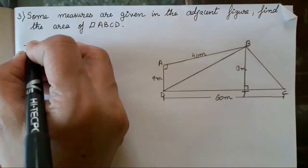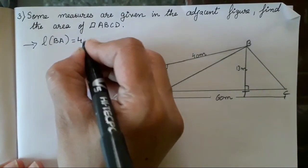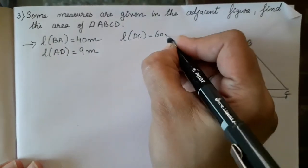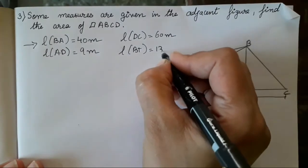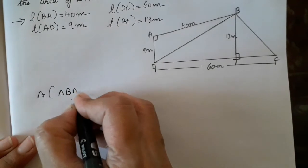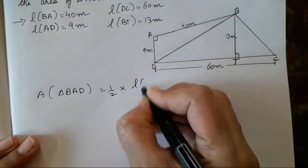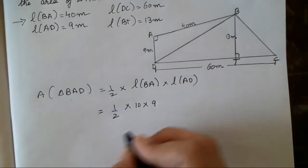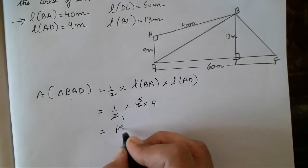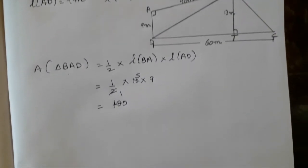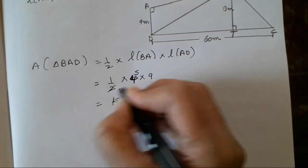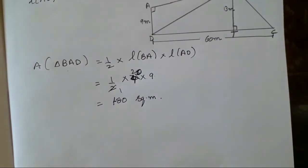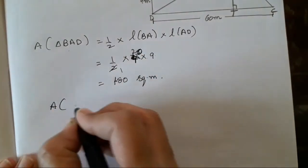Let's move to the next sum. Three triangles are given; the figure is already in the textbook. Given: DC = 60 m, BT = 30 m. First, we find the area of triangle BAD: Area = ½ × BA × AD = ½ × 40 × 9. Reducing: 20 × 9 = 180 square meters.